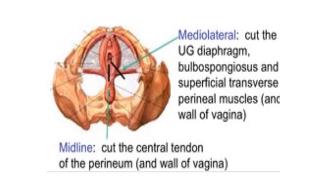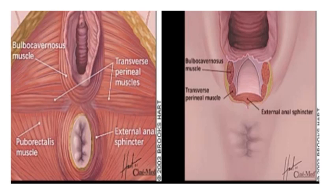Here is the median episiotomy — we cut the central tendon of the perineum, but in the mediolateral episiotomy there is muscle cut: we cut the bulbocavernosus muscle and the superficial and deep transverse perineal muscle. Here also you can see that in the median episiotomy we cut the vaginal mucosa and the fourchette and the central tendon of the perineum with the perineal skin and fascia — no muscle cut.